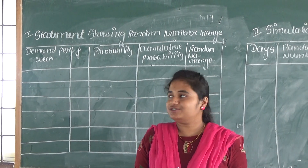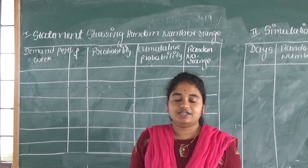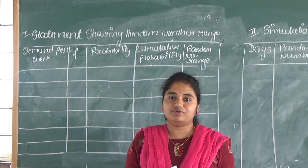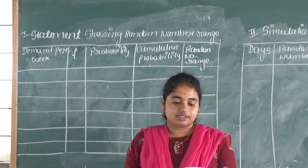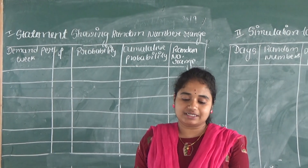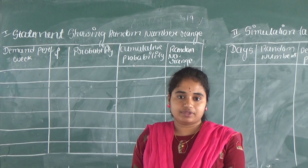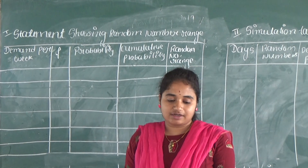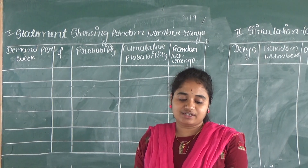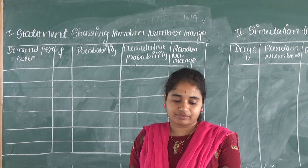Hi dear students, this is a problem related to your last chapter, that is simulation. The problem is: a confectioner sells bakery items, and past data of demand per week within 100 kg frequency is given below.